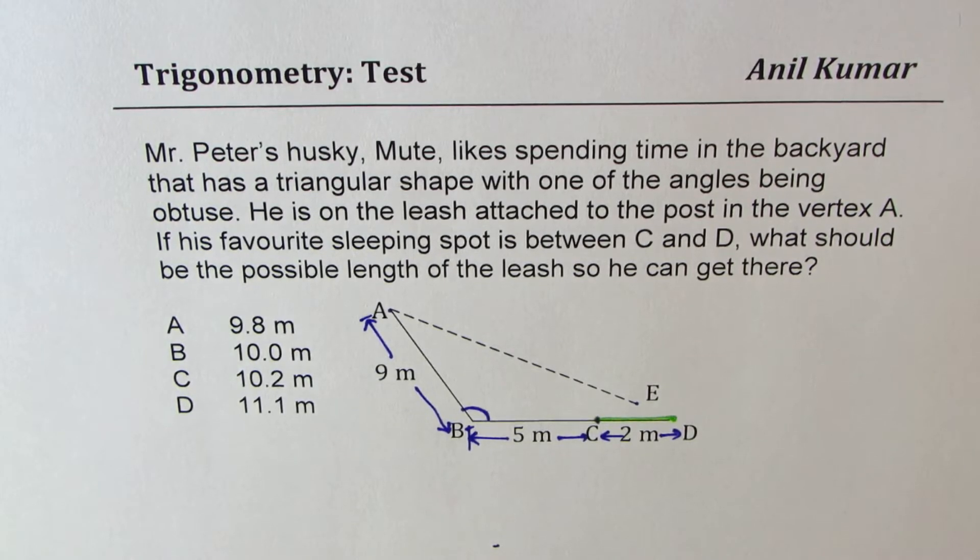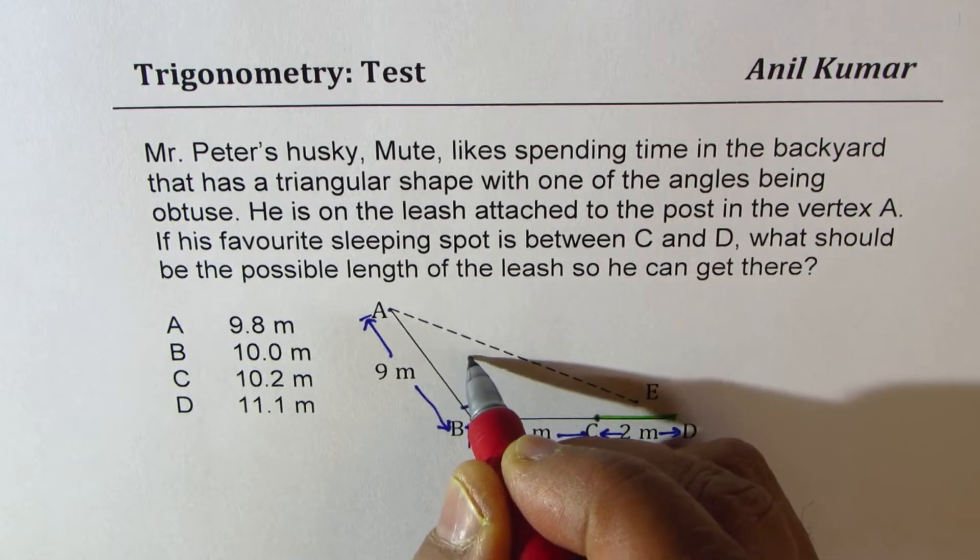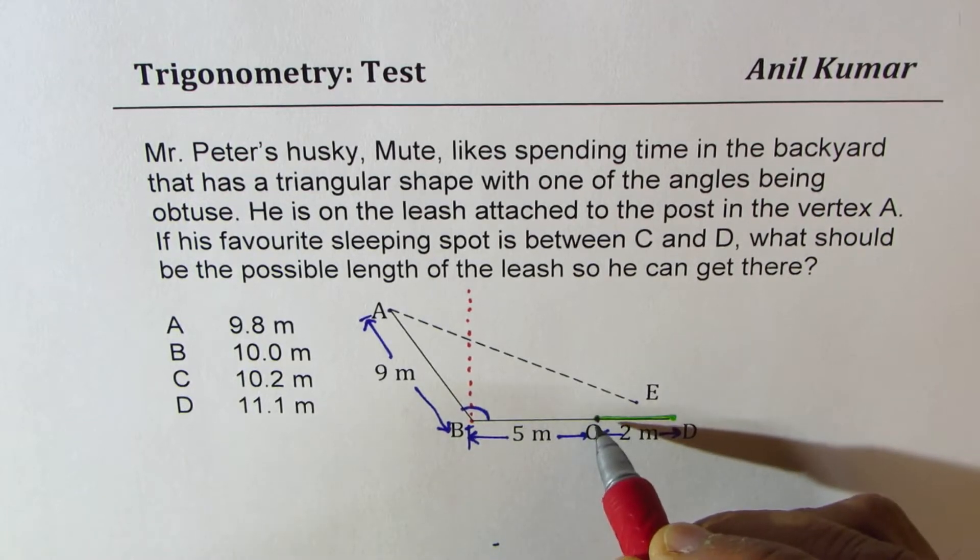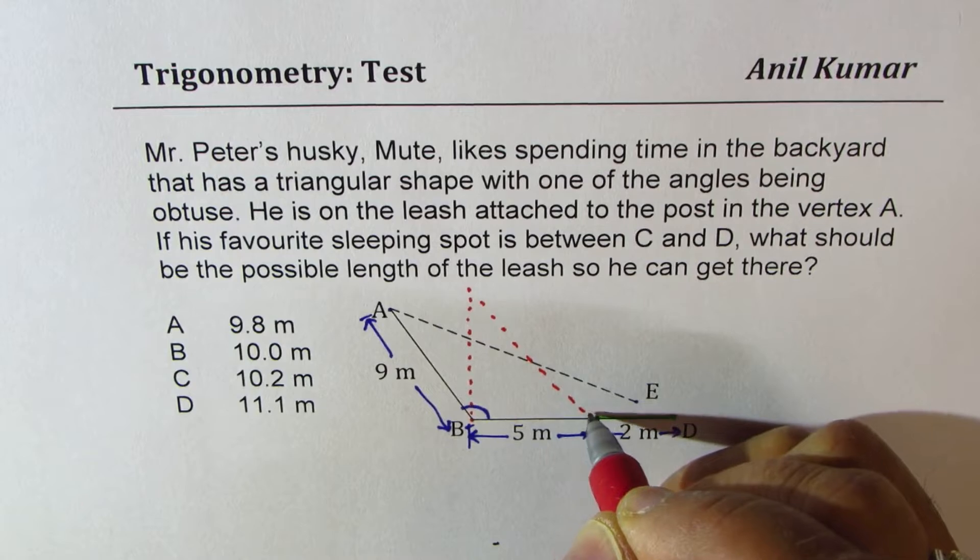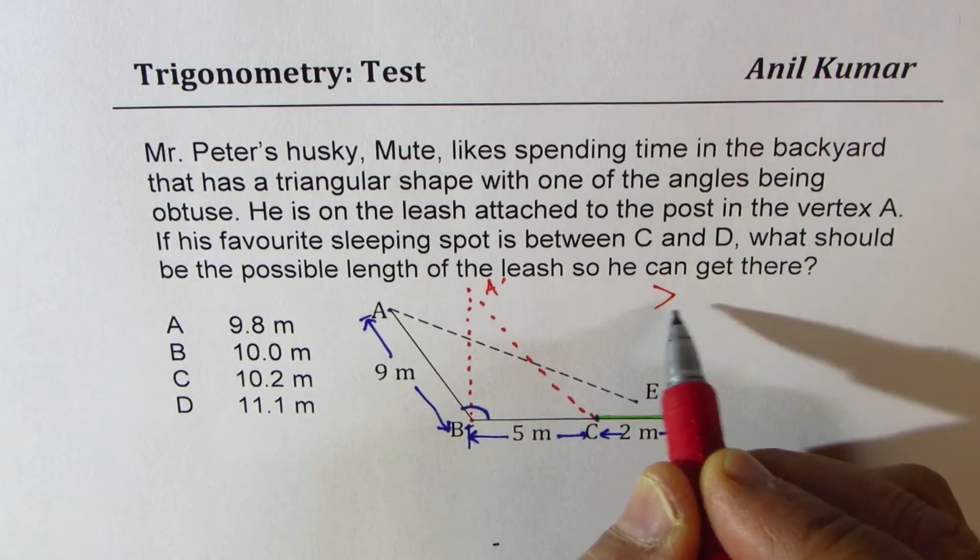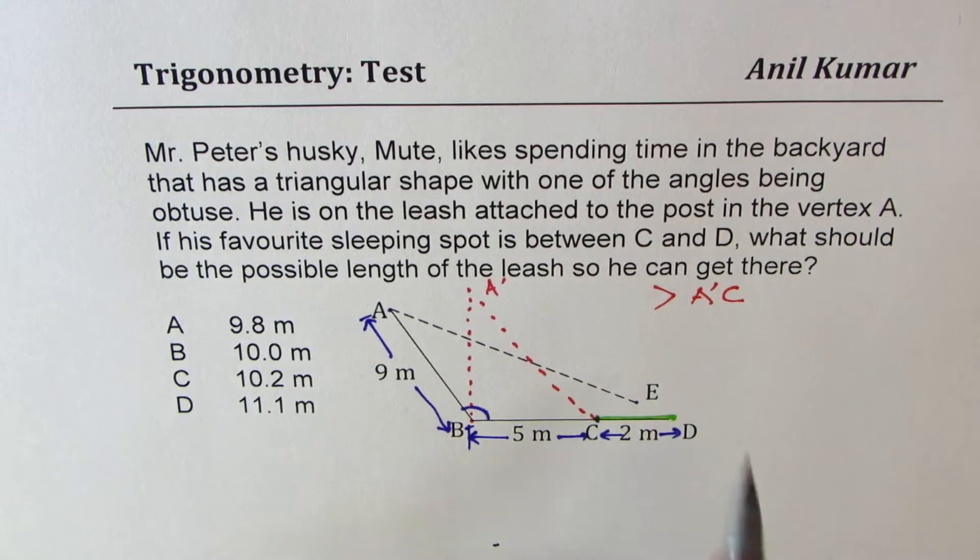What we can do here is, by method of elimination, we can actually get the right choice. Let us assume that we have a case with a right triangle. So the minimum length has to be much greater than, let's say this point is A dash. So we are looking for a length which is much greater than A dash C. This is what we are looking for.